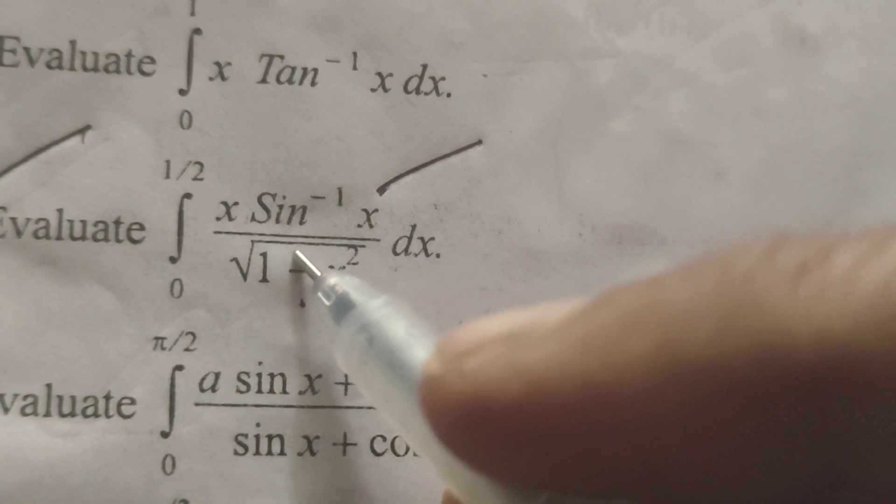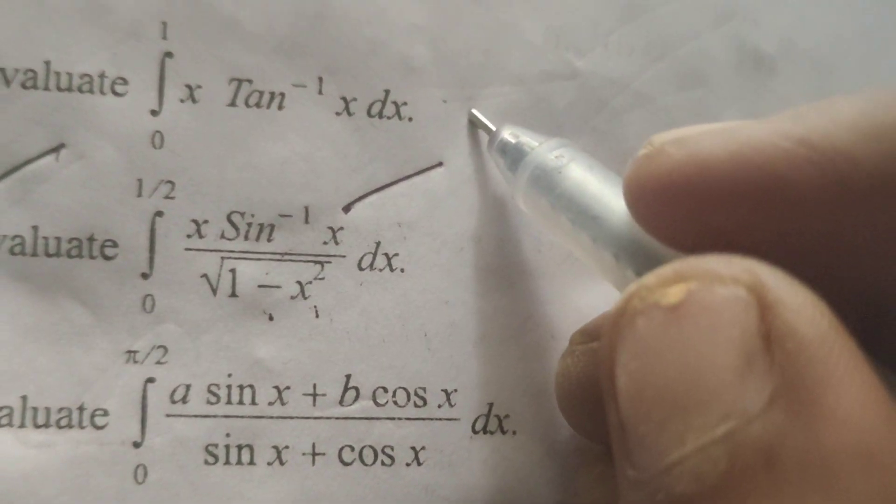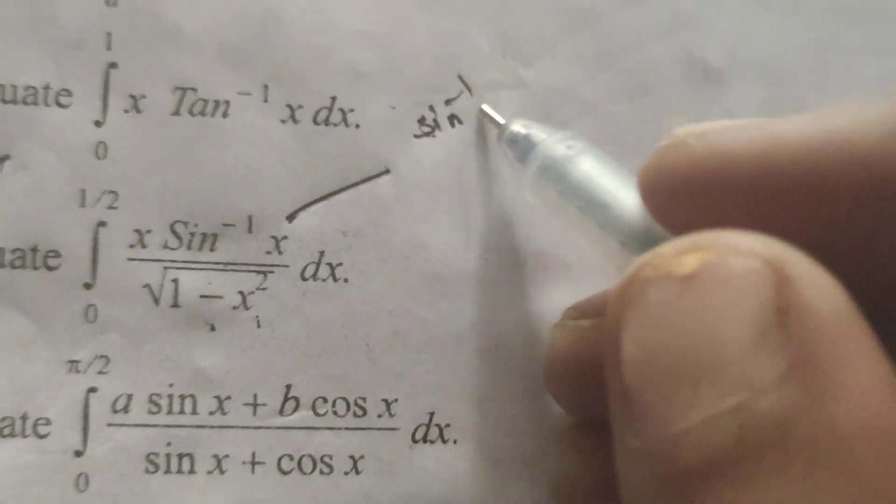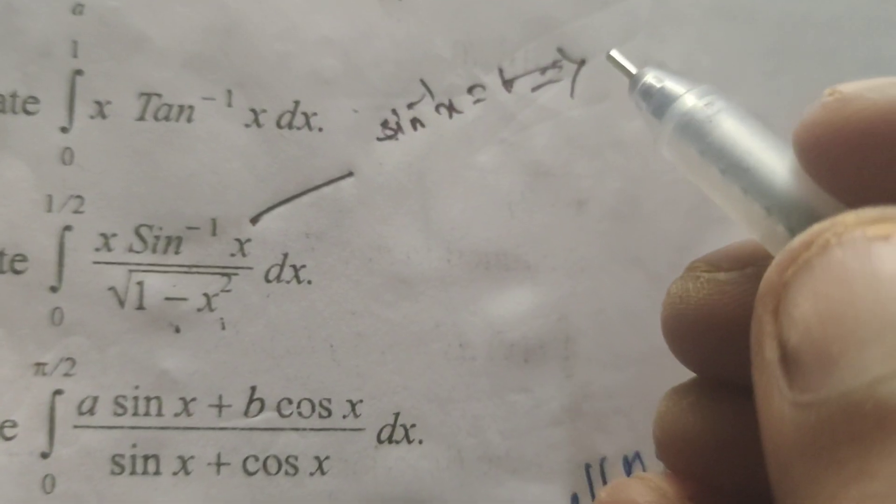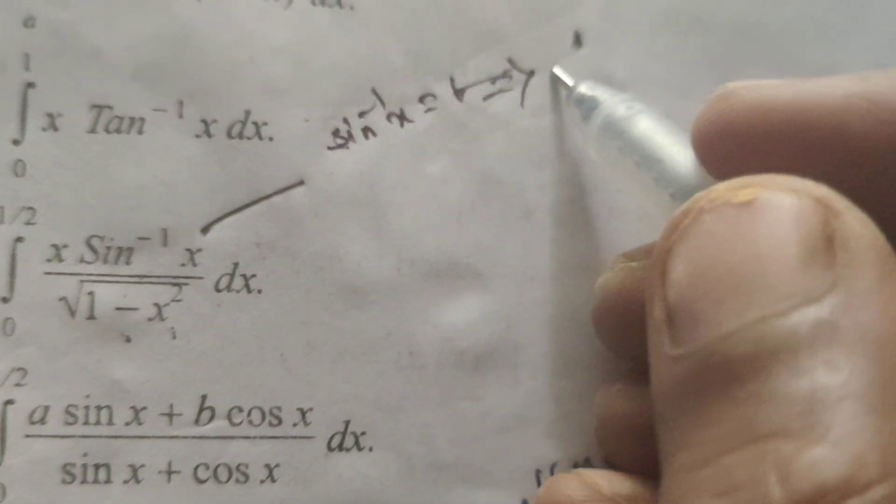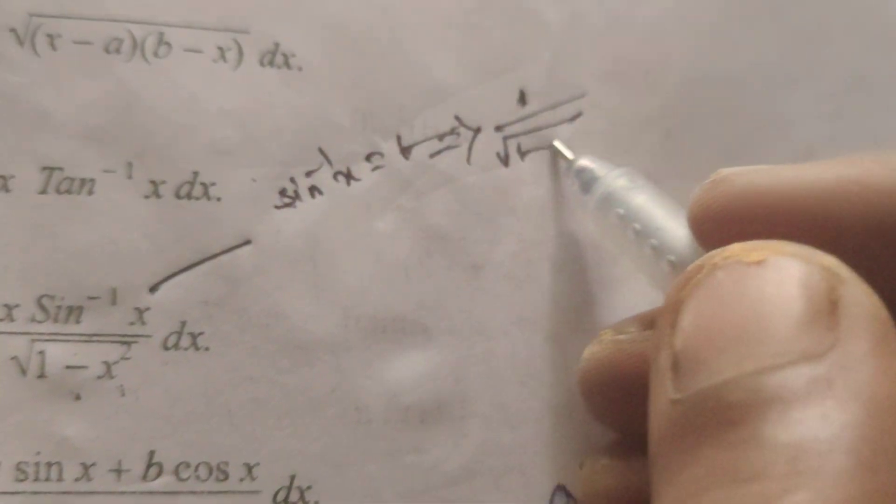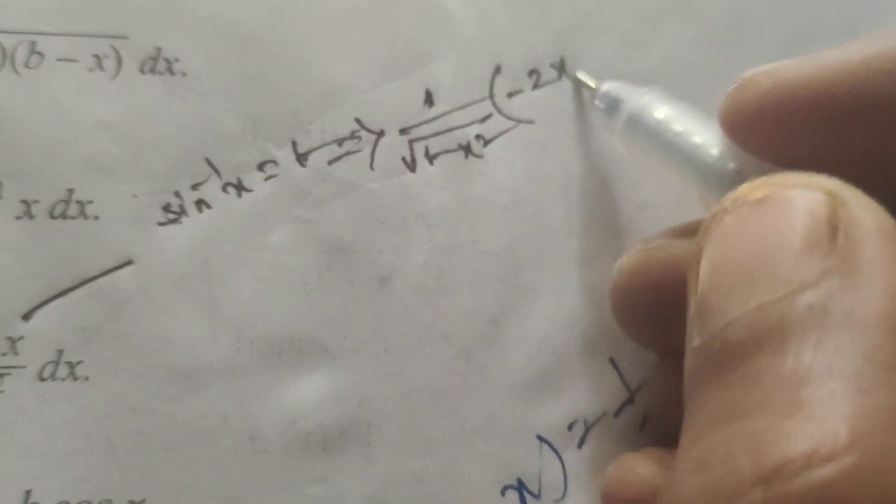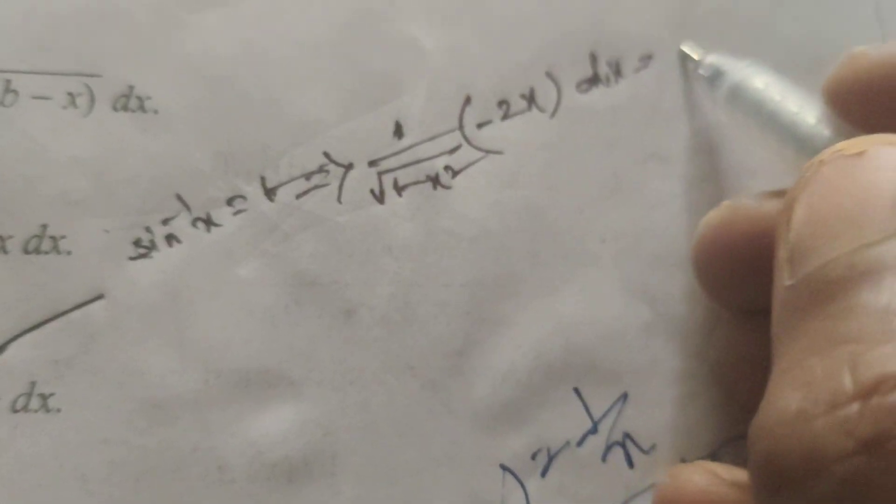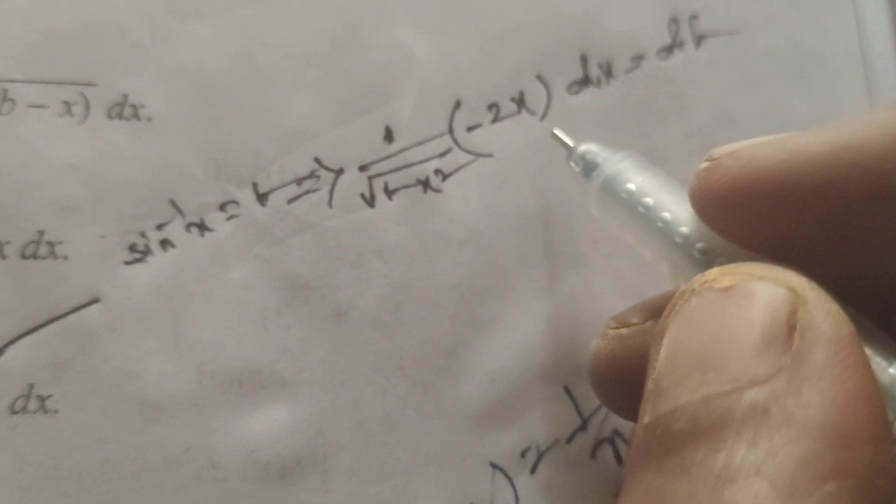Solve the solution using substitution method. Put sin inverse x equals to t. Then differentiate this: 1 by root of 1 minus x square dx equals to dt.